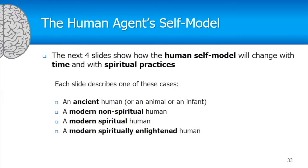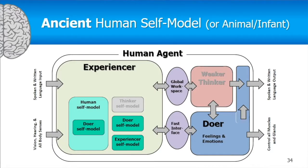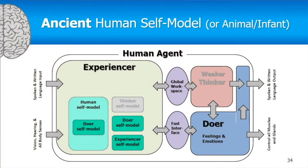The human as a whole is an agent, so there's one more self-model to consider: the entire human self-model. How does that self-model change with both time and with spiritual practices? The experiencer contains the conceptual model of the world, the sensory model of the world, and all of the self-models — the self-model of the thinker, the self-model of the doer, the self-model of the experiencer, and the self-model of the human as a whole.